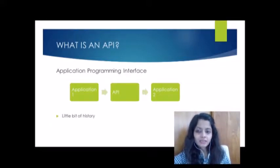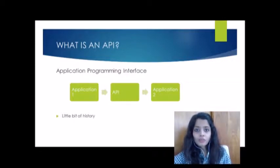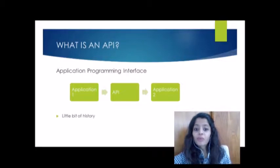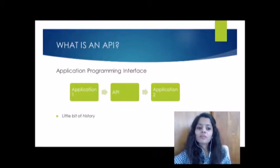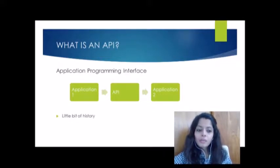What is an API? An API is the acronym for Application Programming Interface, which is a software intermediary that allows two applications to talk to each other. Every time you use Facebook, send an instant message, or check the weather on your phone, you are using an API. APIs are at the forefront of today's technology innovations, allowing mobile applications, cloud computing, and legacy systems to abstract infrastructure.